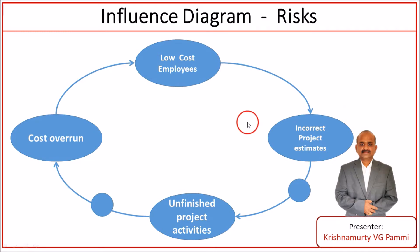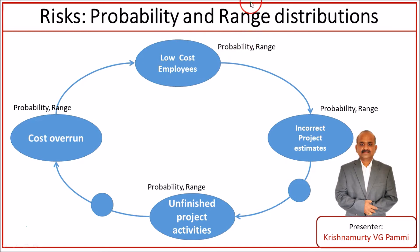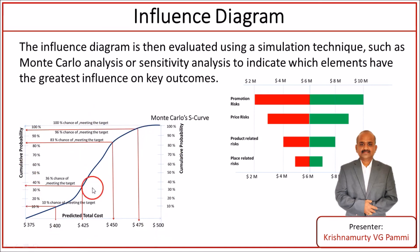This is the beauty of the influence diagram. It is a graphical representation of project events, entities, outcomes or risks, showing what influences them on a time scale so that variables and outcomes can better be analyzed by understanding their relationship. We can also provide probability and range estimates for each of the risks, and validate these using Monte Carlo analysis or sensitivity analysis using a tornado diagram, to understand the key risk involved and the net outcome on overall project objectives.